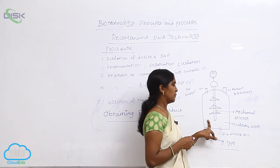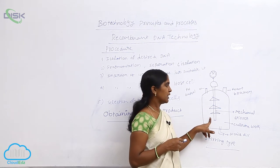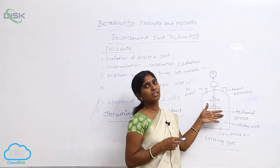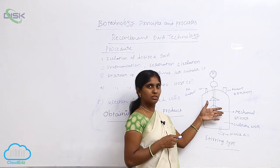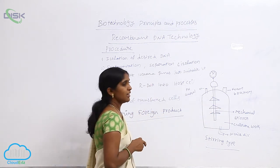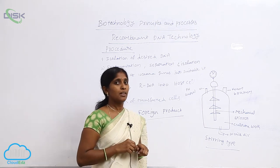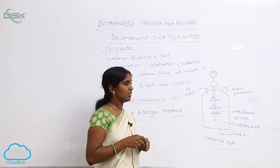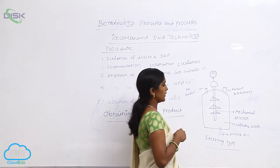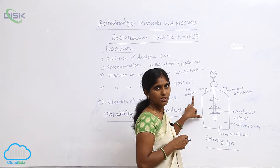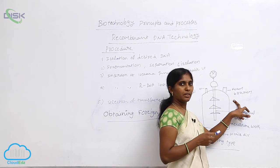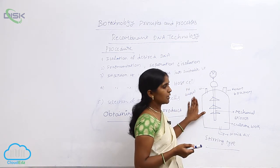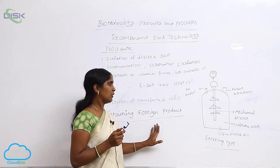This is a stirring type of bioreactor. A mechanical stirrer is present here, and the culture broth containing bacterial cultures is present inside the bioreactor. While the mechanical stirrer is stirring, it provides healthy aeration — better aeration and even mixing — and the fermentation is going on here. The pH control is monitored continuously, a foam breaker is also present, and sterile air is released here.